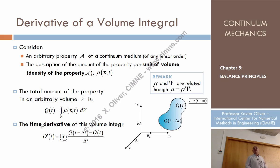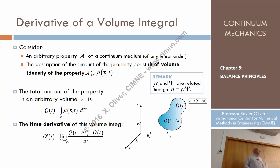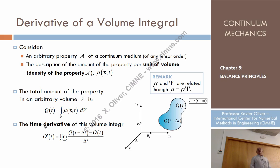Since the contents depend on time, it makes mathematical and physical sense to take the derivative of these contents with respect to time, denoted Q′. Q′ is the derivative of Q with respect to time, computed as the limit of Q(T + ΔT) − Q(T) divided by ΔT as ΔT → 0. That's the definition of a derivative.